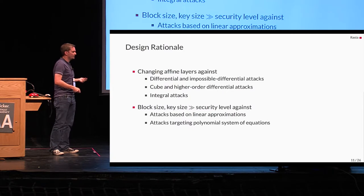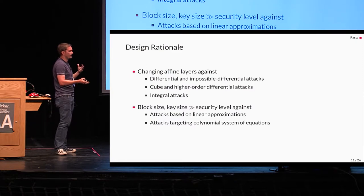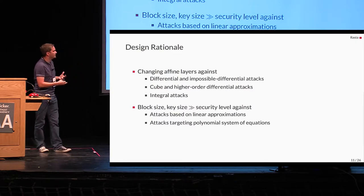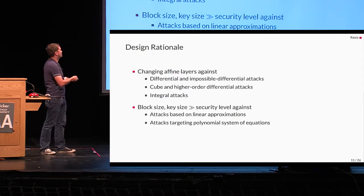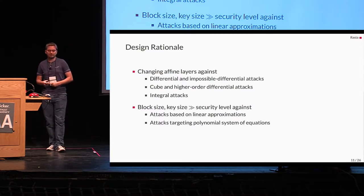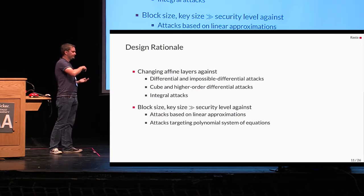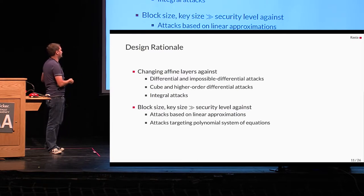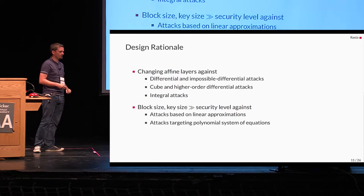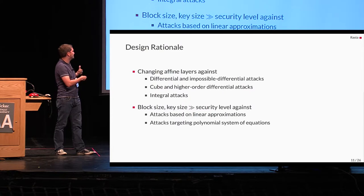So, okay. So what's the idea behind this design? As mentioned before, the idea is that we have changing affine layers to get a changing system of equations to provide protection against differential and impossible differential attack, cube and higher order differential attacks, and also integral attacks. However, some attack vectors remain, especially attacks which exploit potential good existing linear approximations, or even attacks targeting directly the polynomial system of equations we get. And for this reason, we also might use a block size and the key size for Rasta, which is bigger than the security level.